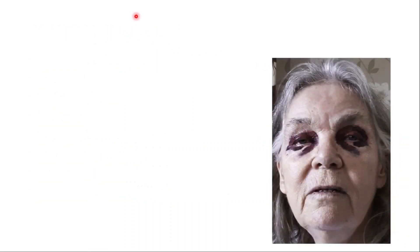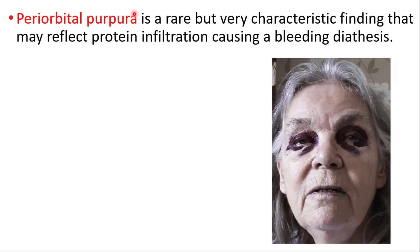Here I'm going to talk about a characteristic symptom of AL amyloidosis. Periorbital purpura is a rare but very characteristic finding that may reflect protein infiltration causing a bleeding diathesis.